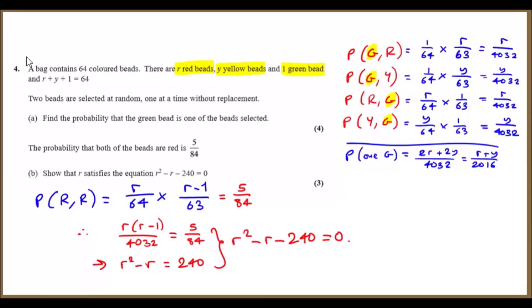Okay, number four. A bag contains 64 colored beads: red beads, white beads, yellow beads, and one green bead. In total, if we add all these up, we should get 64, which they've done. Now, two beads are selected at random, one at a time, without replacement. The keyword is without replacement.